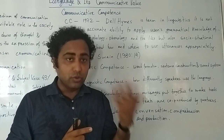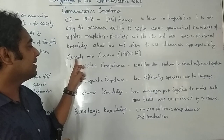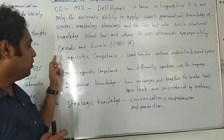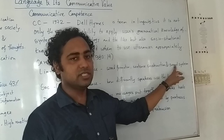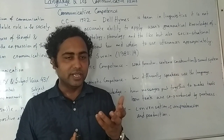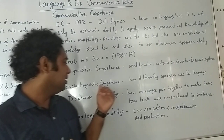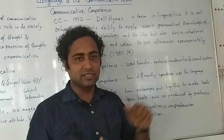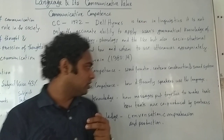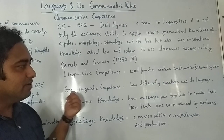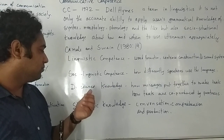So you need to know very carefully when to use what, because when we use language we are very different in every situation. Now let me talk about Canale and Swain. In 1980, in their article, they talked about four types of competence. Number one is linguistic competence, which talks about word formation, sentence construction, and sound system. If your linguistic competence is accurate, appropriate, and fluent, the message goes fast and communication becomes very successful. Then comes sociolinguistic competence — how differently speakers use the language. When you are talking to someone senior, you convey one type of message; when someone is junior, you convey another type of message for the same situation.